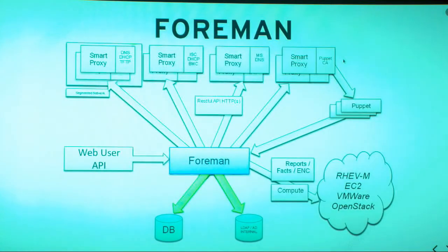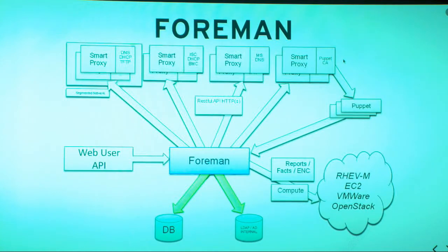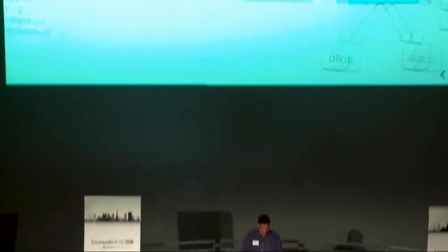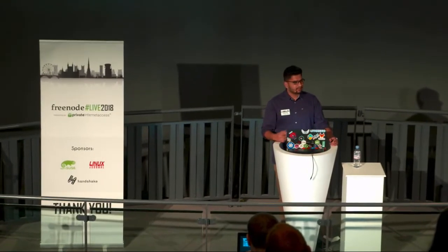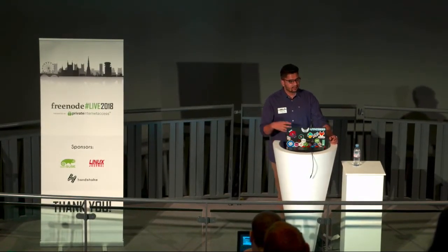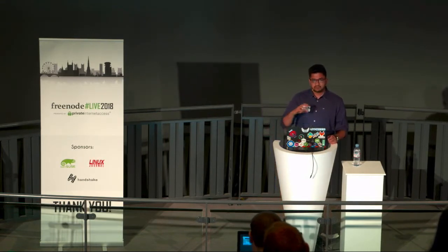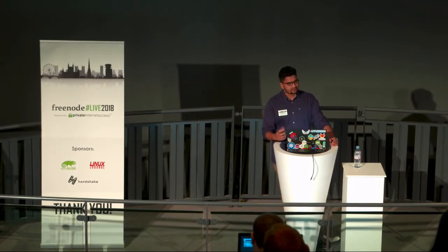Next is authentication. Foreman is integrated with LDAP and Active Directory. Foreman is basically a Ruby on Rails application, so you can use databases like PostgreSQL or MySQL or any relational database. Foreman also has a very strong RBAC model — you can restrict users and give them access as required. It has a web UI, a CLI that consumes the API, so all actions available in the UI can also be performed through CLI.